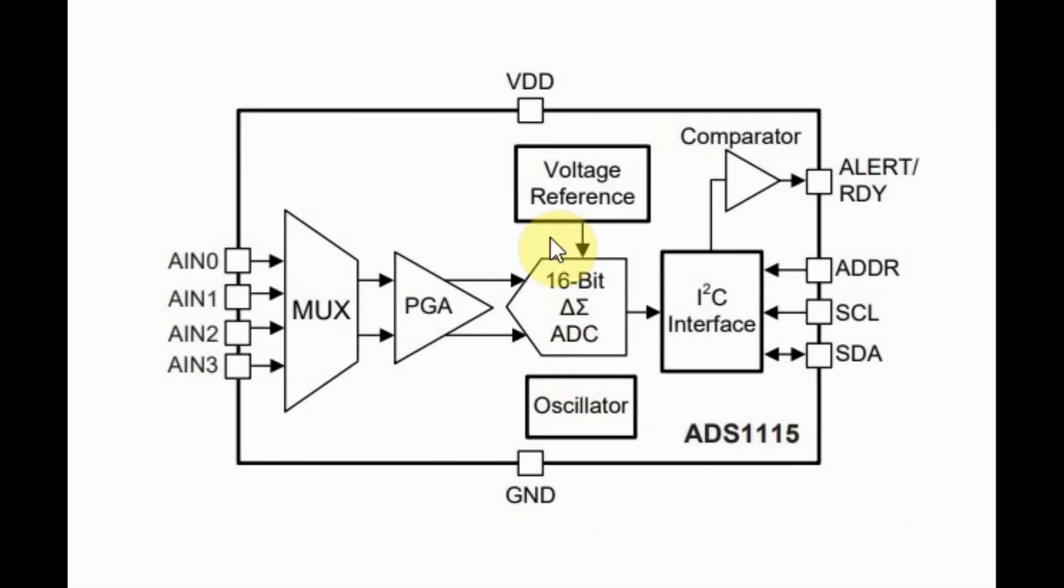A block diagram of the ADS-1115 is shown here, where it can accept up to 4 analog inputs through pins analog input 0 to analog input 3. Inside the chip we have a multiplexer which can multiplex the 4 inputs.